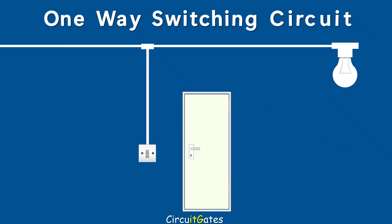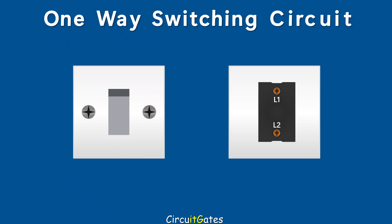A one-way switching circuit is a type in which lamps are switched from one location, typically in areas like offices and rooms with one entrance. A one-way switching circuit consists of one or more lamps connected to a one-way switch. A one-way switch has two terminals — one terminal is for the live wire from the supply, and the other terminal is for the live wire going to the lamp from the switch.